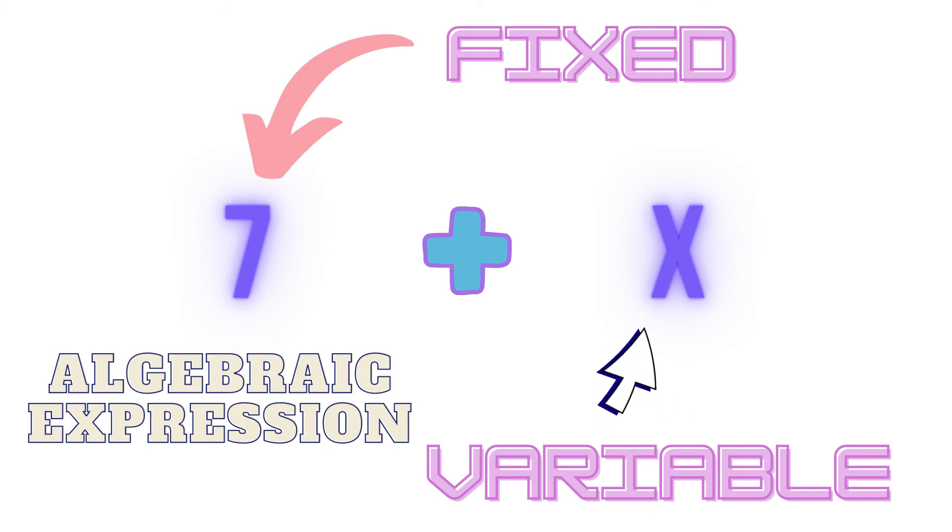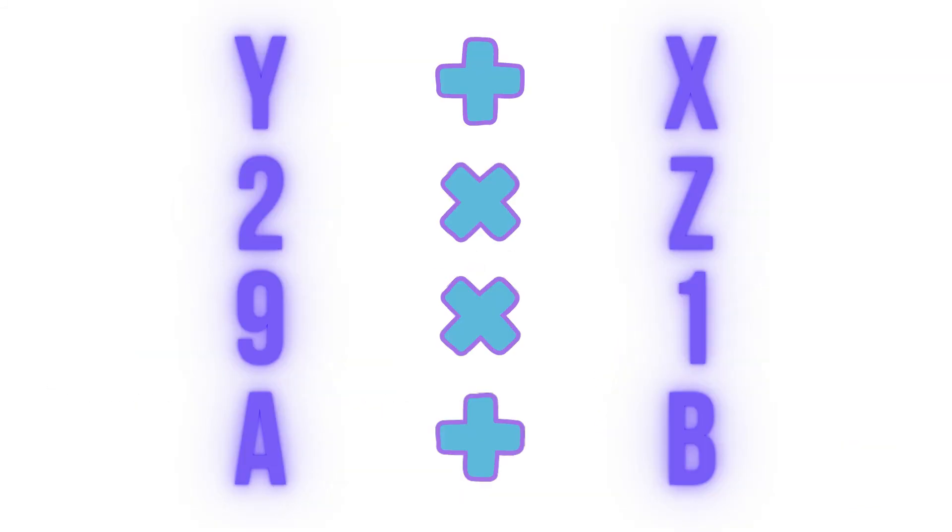Basically, this X is a symbol that represents a varying quantity and this symbol can be anything. It can be a square, a star, or any shape for that matter. We just use X, Y, Z for our convenience. I hope you get a general idea of what a variable is from this video.